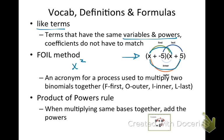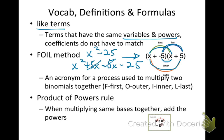X times 5 is 5X, positive. I stands for inner — our inner terms are negative 5 and X, so we get negative 5X. And then our last terms are negative 5 and 5, which gives negative 25. Simplifying, positive 5X minus 5X is 0, so simplified we get X squared minus 25. That's a review of how to multiply two binomials using the FOIL method.